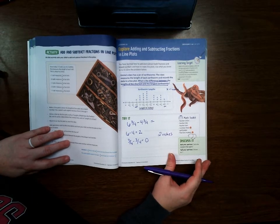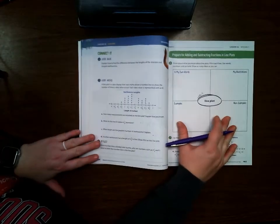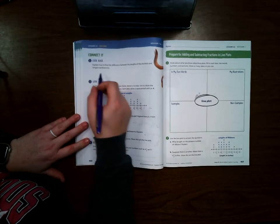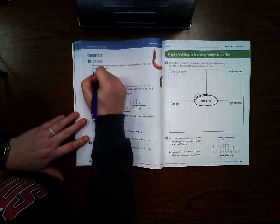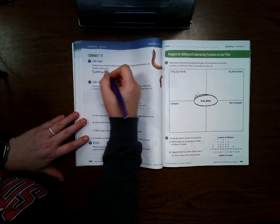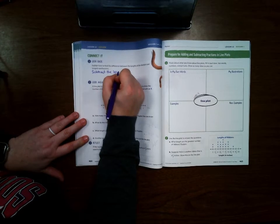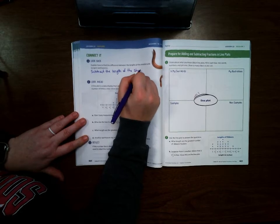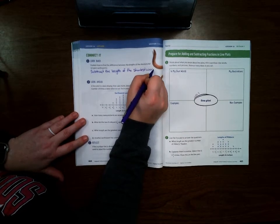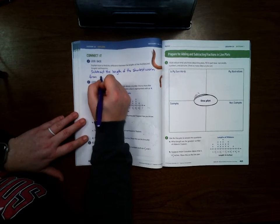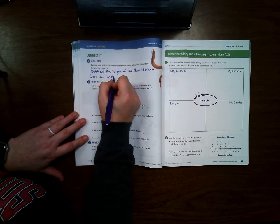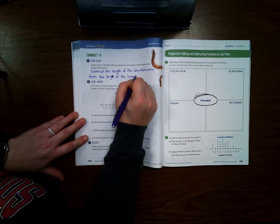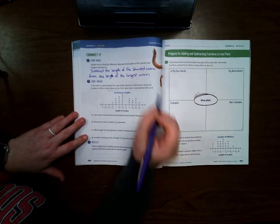Let's go ahead and turn to page 464. It says, look back. Explain how finding the difference between the lengths of the shortest and longest earthworms. So you subtract the length of the shortest worm from the length of the longest worm.